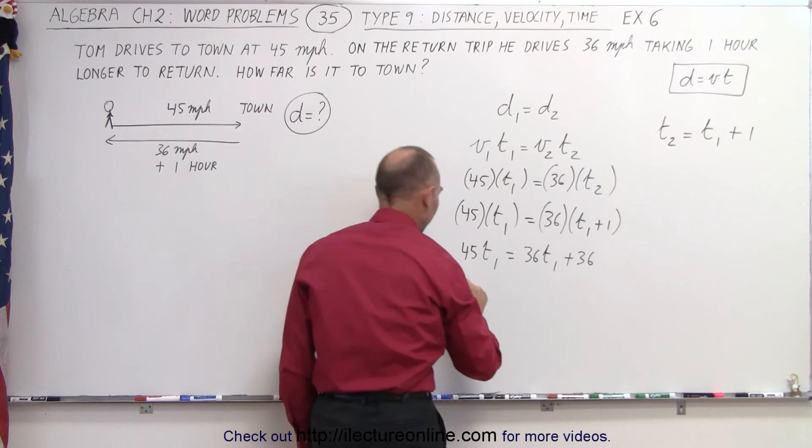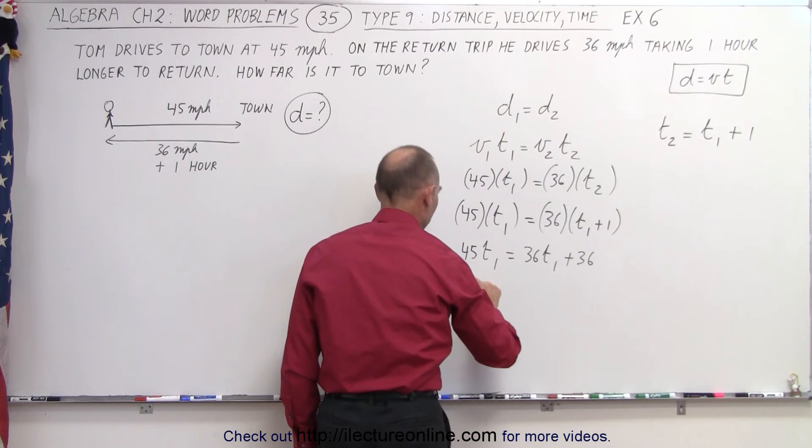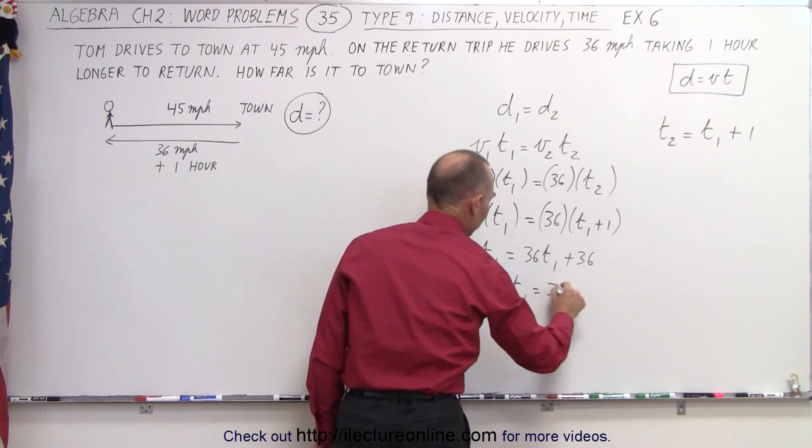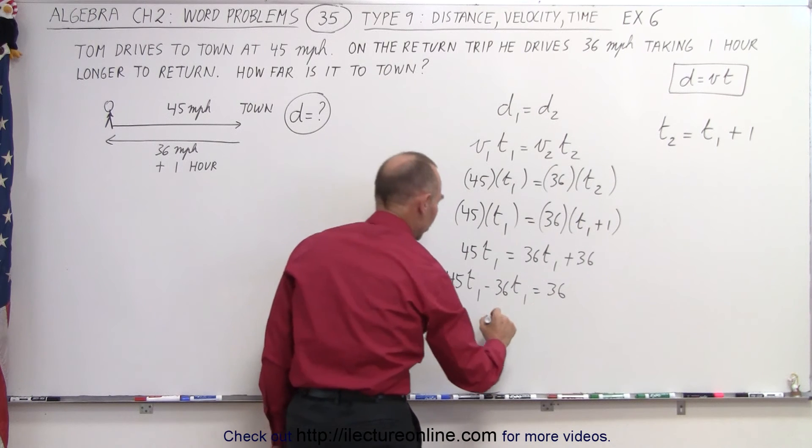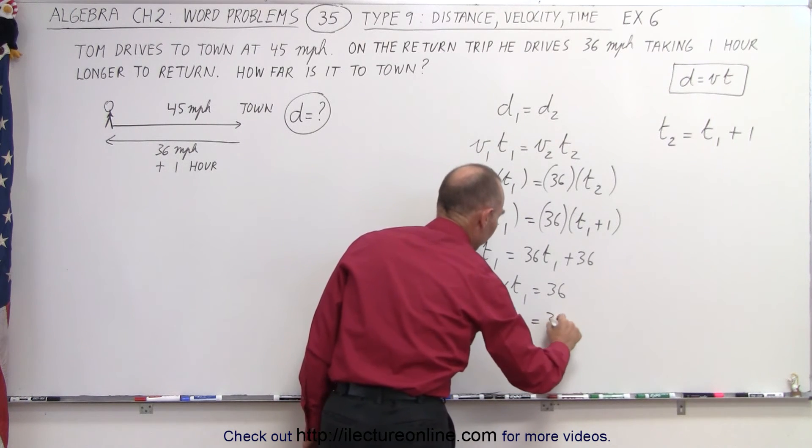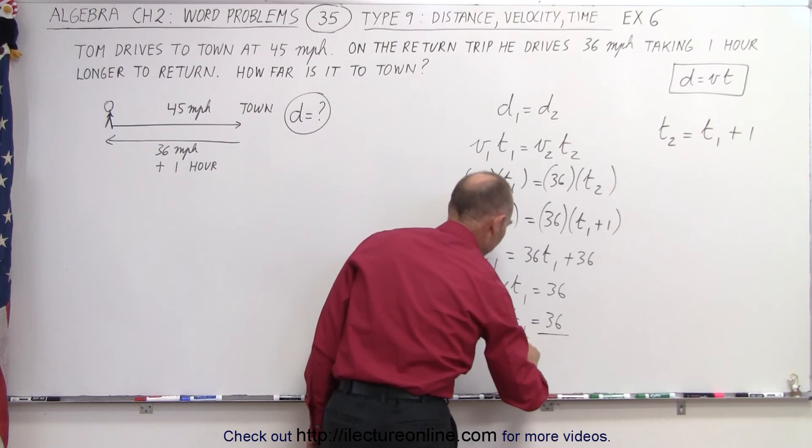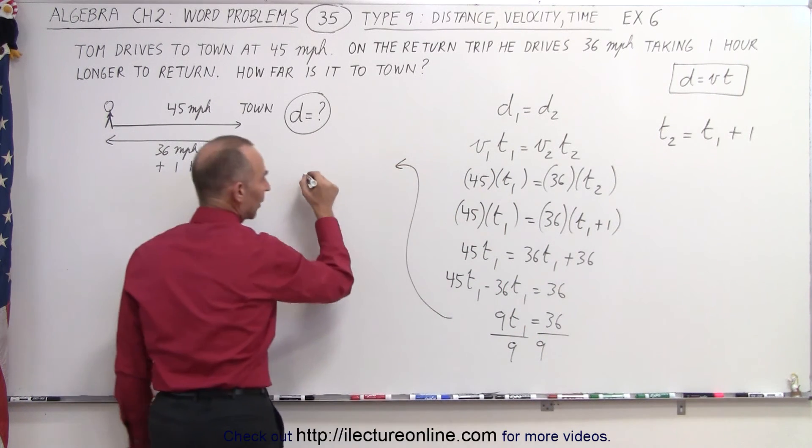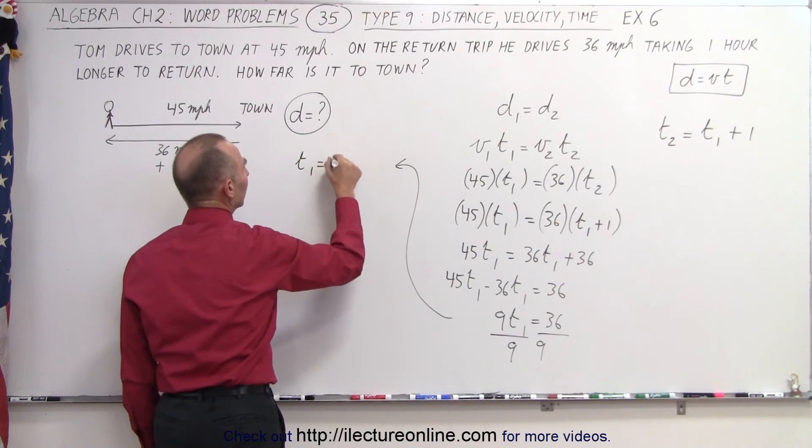Moving the t₁ term to the left side, 45t₁ minus 36t₁ is equal to 36. Combining like terms, 9t₁ is equal to 36. Divide both sides by 9. And coming up here, we know now that t₁ is equal to 4.